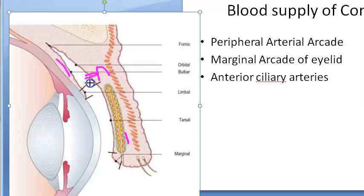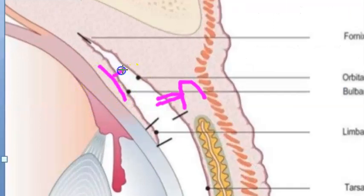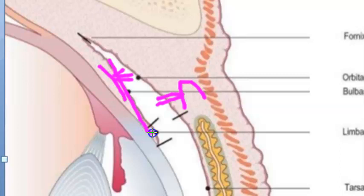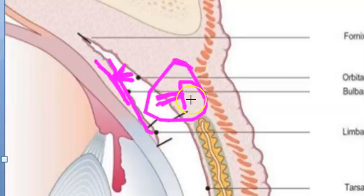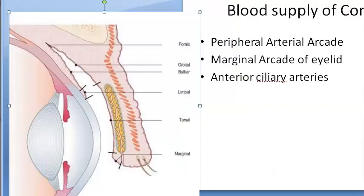The bulbar conjunctiva is supplied by the posterior conjunctival arteries, which are branches of the arcades, and the anterior conjunctival arteries, which are branches from the anterior ciliary arteries. There are also some anastomoses between the posterior conjunctival arteries and the anterior conjunctival arteries, forming a pericorneal plexus.